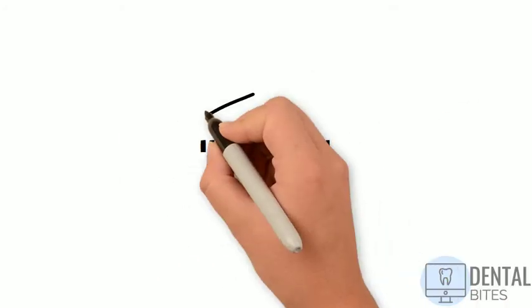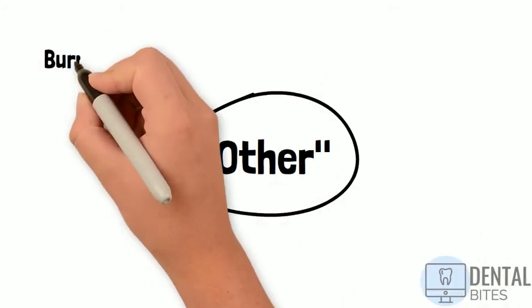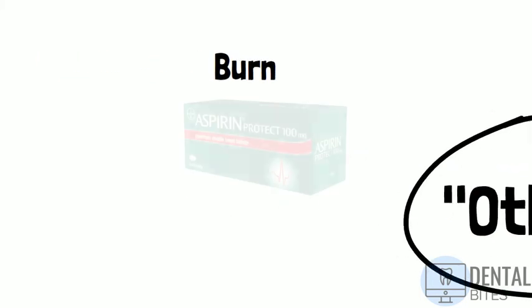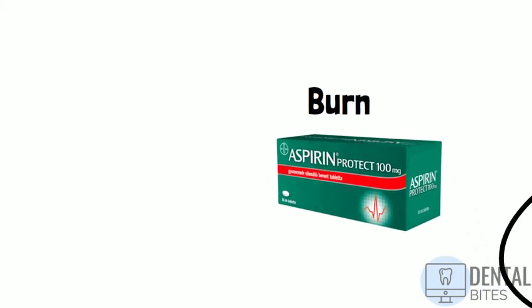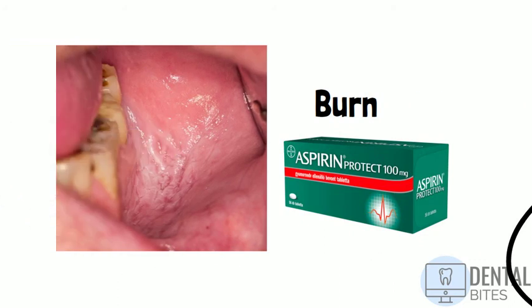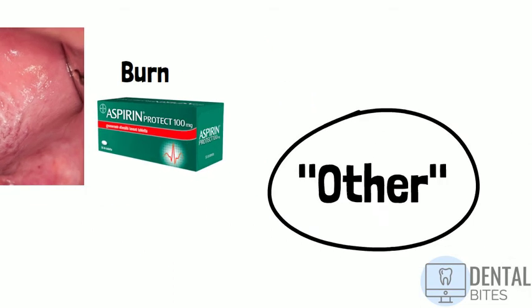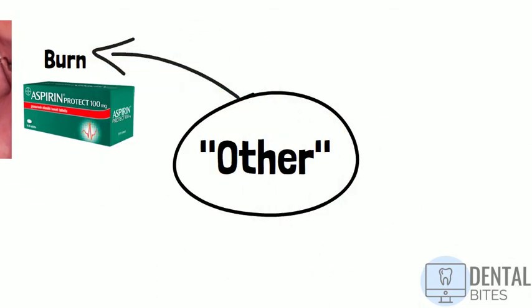In the other category, a burn can cause a white patch — for example an aspirin burn, which can also give erythema and ulceration. This happens when patients attempt to treat oral discomfort or toothache by applying aspirin directly onto the affected site. You might also see this under a full denture.